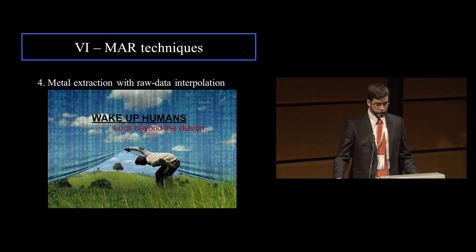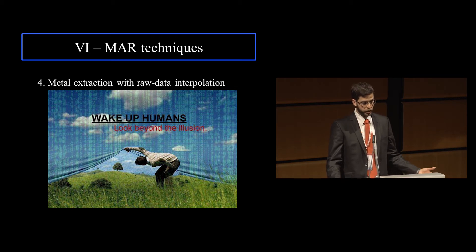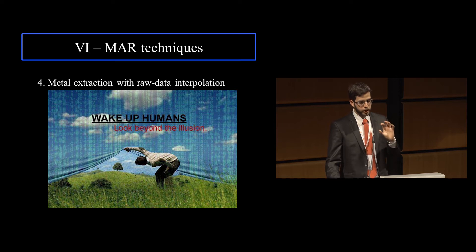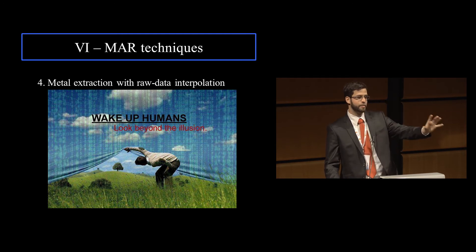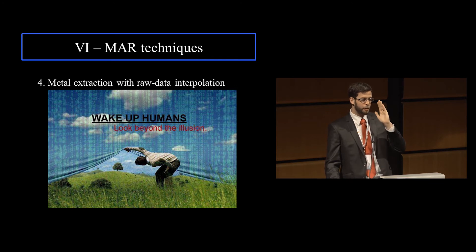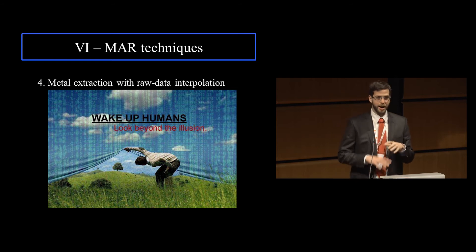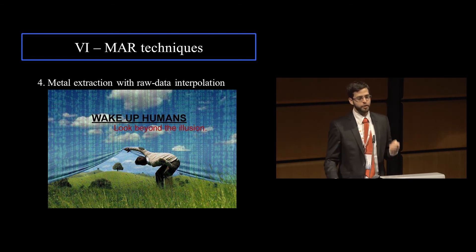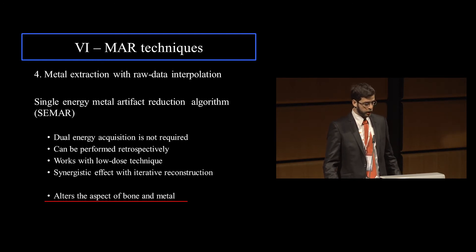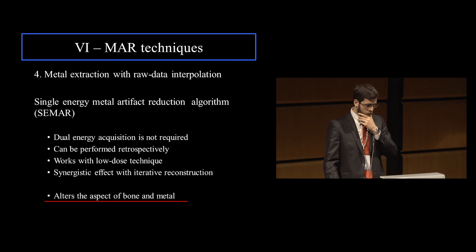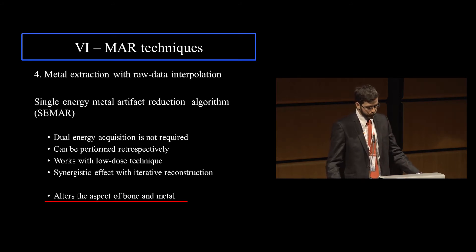Now I'll get to the center of my talk — this technique called metal extraction with raw data interpolation, or CMAR. This is an interesting technique because it tries to solve the same problem in a different way. With all the other techniques shown, basically what they tried to do is improve the photons that traverse the metal — always trying to look through the metal. With this technique, we sort of try to look around the metal — take it away and look around instead of going through it. The algorithm is used for single energy acquisition, though it can also be adapted to dual energy.